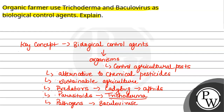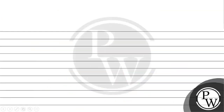Fourth are competitors — these are organisms that out-compete pests for resources. This includes beneficial soil fungi that can suppress harmful soil pathogens by colonizing. Now let's talk about Trichoderma. Trichoderma is a species of fungi.